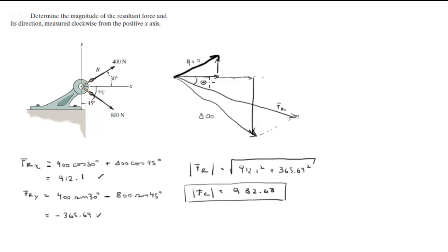And the angle, this angle right here, you calculate it with the tangent inverse of the y-value, 365.69, over the x-value, 912.1. When you do this, you're going to get that theta equals 21.85 degrees.